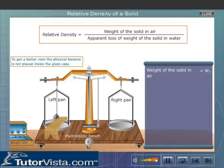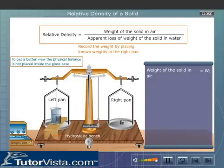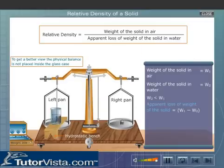Now place a hydrostatic bench across the left pan as shown here. Lower the solid in water and record its weight w2. Now find the apparent loss of weight of the solid.